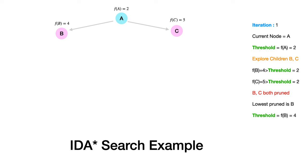The main rule in IDA* is: whenever F(n) becomes greater than the threshold, we stop pursuing that path. We check if F(n) values are less than or equal to threshold; only then do we go deeper. Once F(n) exceeds the threshold, we don't pursue that particular path.